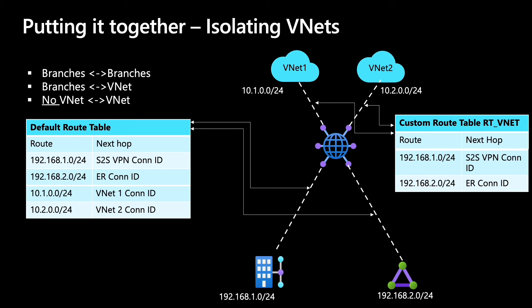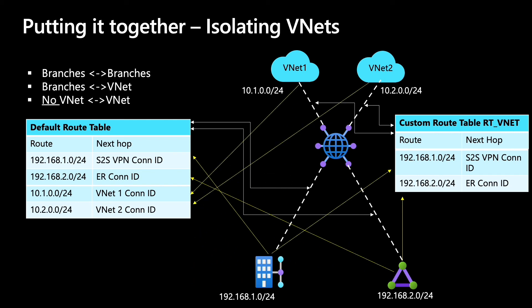And what did we propagate? We propagated from the branches to each one of these route tables. So when branches propagate to the route tables, the route tables have the routes, and whoever needs to reach those branches, they can do so. For the VNets, they propagated to the default route table only — VNet one and VNet two both did. The VNets did not propagate to the custom route table, because if they did, those specific routes would have kicked in and VNets would not have been isolated.